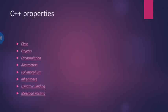Hello students. Today we will start with the remaining C++ properties. In the last video, we discussed about class, objects, encapsulation, abstraction and polymorphism — how they are interrelated and what are the properties of C++. Today we will start with the next property of C++: inheritance.